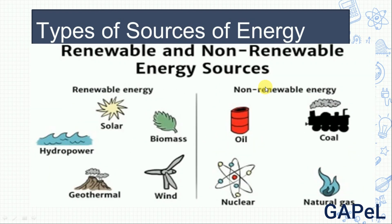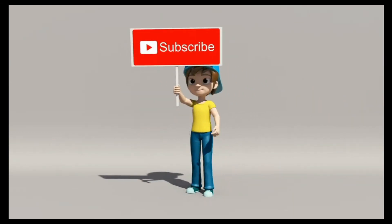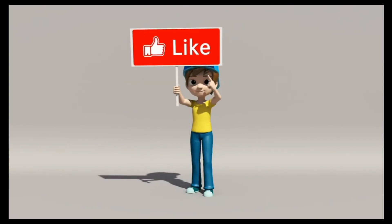Some examples of renewable sources are: solar energy, biomass, wind energy, and hydropower. These will not exhaust. Non-renewable sources include coal, natural gas, and nuclear energy. These are all non-renewable — they will eventually be exhausted.